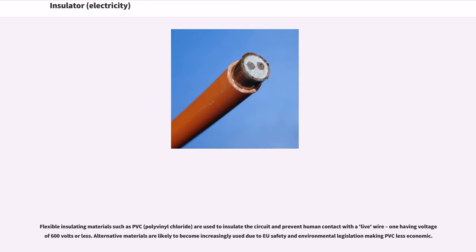Flexible insulating materials such as PVC, polyvinyl chloride, are used to insulate the circuit and prevent human contact with a live wire, one having voltage of 600 volts or less. Alternative materials are likely to become increasingly used due to EU safety and environmental legislation making PVC less economic.